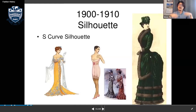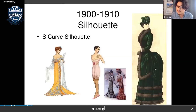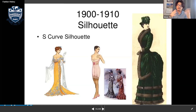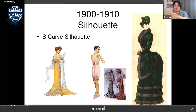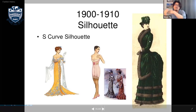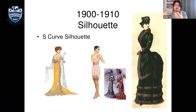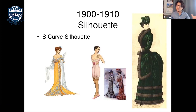The silhouette at this time was an S-curve shape. So in the Victorian era we had the hourglass, and in the Edwardian era we have the S-shaped silhouette — the bottom gets a little bigger.